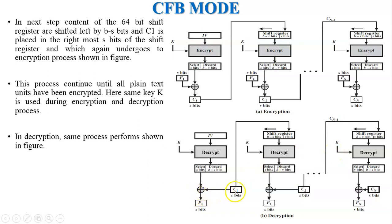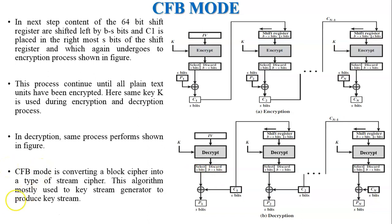The cipher text is fed back into the shift register, which is why this is called cipher feedback mode. The application of CFB mode is converting a plain text block cipher into a type of stream cipher. This algorithm is mostly used as a key stream generator to produce a key stream.